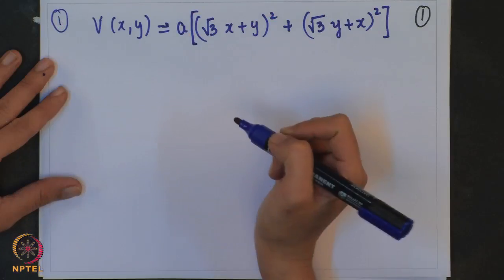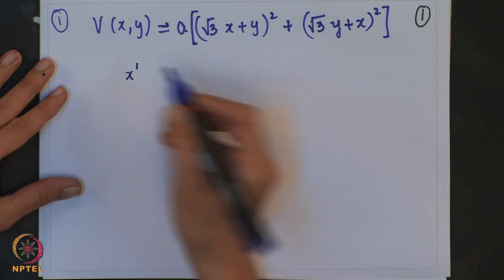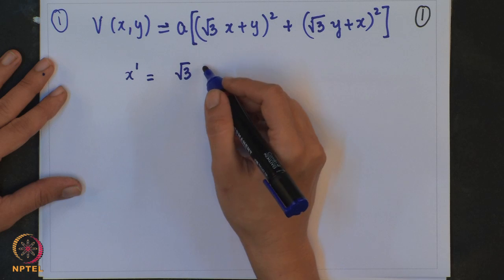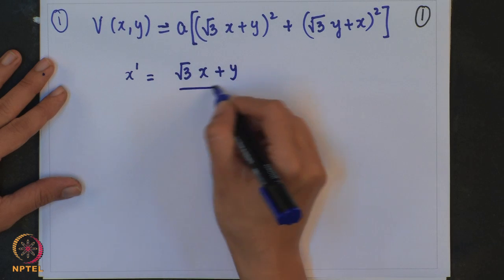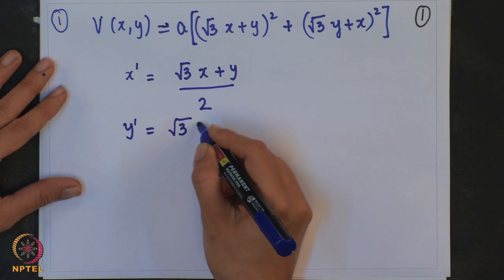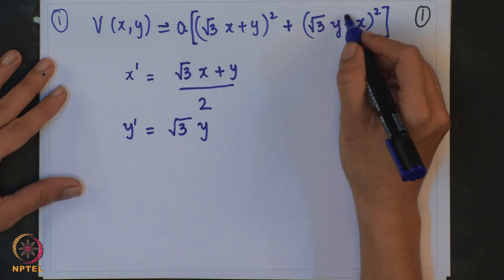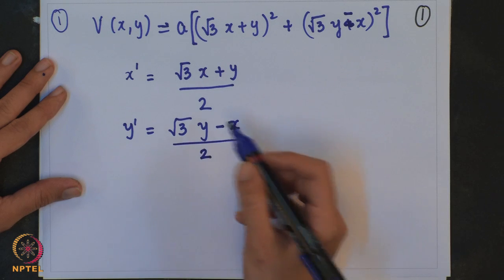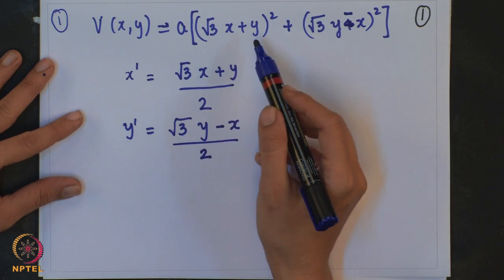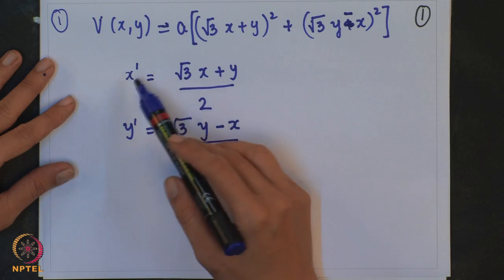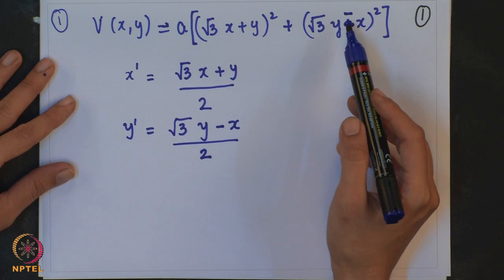Let us redefine these coordinates: x' = (√3x + y)/2 and y' = (√3y − x)/2. There is a square over each expression, so when I rewrite this I will have x' squared plus y' squared.